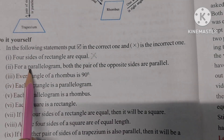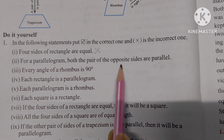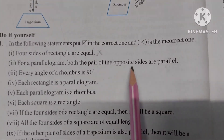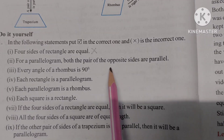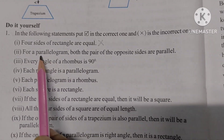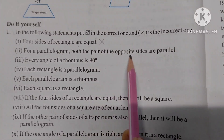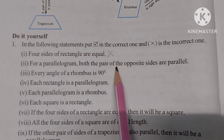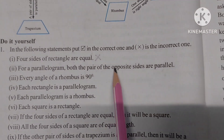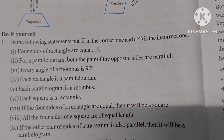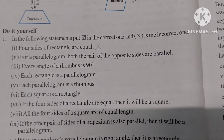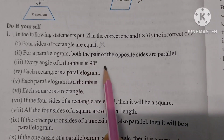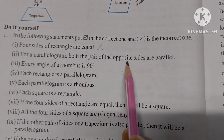Number 2: For a parallelogram, both the pairs of opposite sides are parallel. This is the property of a parallelogram — both pairs of opposite sides are parallel.